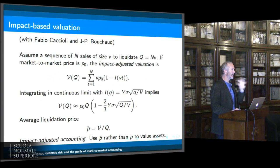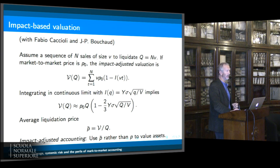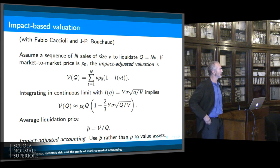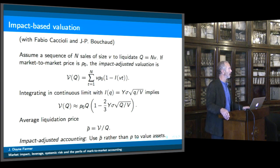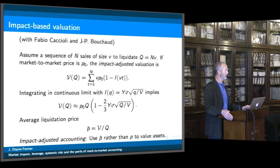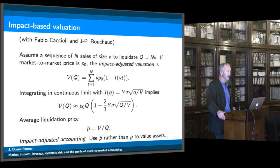Now I want to show you what this idea of market impact is good for, getting to financial instability. One thing it's good for is to change the way we do accounting. Right now you typically do accounting using mark-to-market, which is an intrinsically marginal idea — you ask, if I went out and sold one share, what price would I get for that share, and then you mark all the shares in your portfolio to that price. But since there's market impact, in fact you're not going to be able to sell all those shares at that price. So you're overvaluing your portfolio when you do that. Practitioners know this, but I think we should start taking advantage of what we've learned about market impact to do this quantitatively.